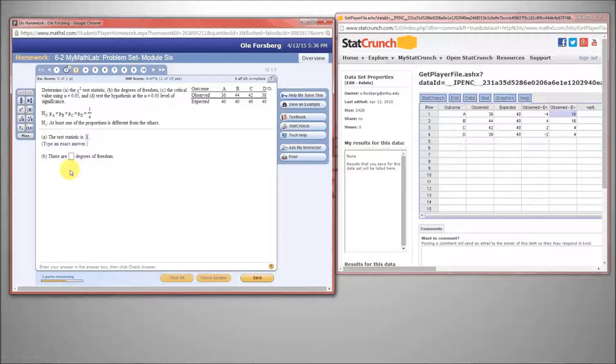Degrees of freedom for a chi-squared goodness-of-fit test is the number of observations minus 1. There's four observations, or four groups. You can think of this maybe in terms of groups. A, B, C, D, four groups. 4 minus 1 is 3.